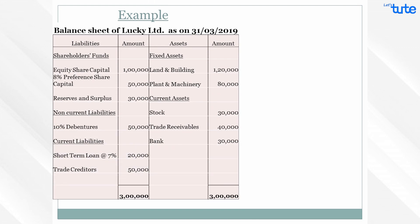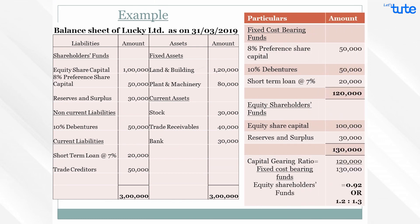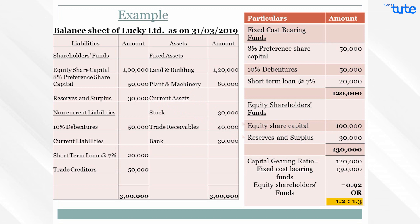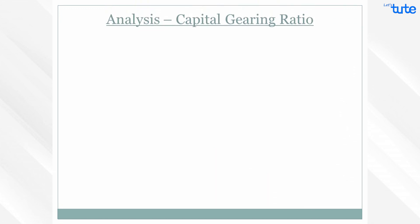Let's take an example to understand this in more detail. The balance sheet of Lucky Limited is given as on 31st March 2019. Fixed interest or dividend bearing funds will include 8% preference share capital of 50,000, 10% debentures of 50,000, and short-term loan at 7% of 20,000 — totaling 1,20,000. This is divided by equity shareholder's funds: equity share capital of 1,00,000 and reserves and surplus of 30,000, totaling 1,30,000. This gives a ratio of 0.92, or expressed as 1.2 is to 1.3.